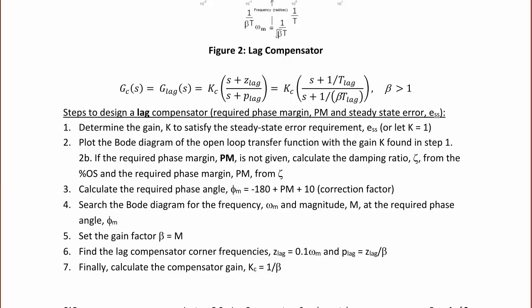Steps to design a lag compensator. Step 1: Determine the gain K to satisfy the steady-state error requirement ESS, or let K equal 1. This is similar to the first step for a lead compensator. Step 2: Plot the Bode diagram of the open-loop transfer function with the gain K found in step 1. Step 3: If the required phase margin PM is not given, calculate the damping ratio zeta from the percent overshoot and the required phase margin from zeta. Calculate the phase angle at the minimum phase: negative 180 plus PM plus 10.